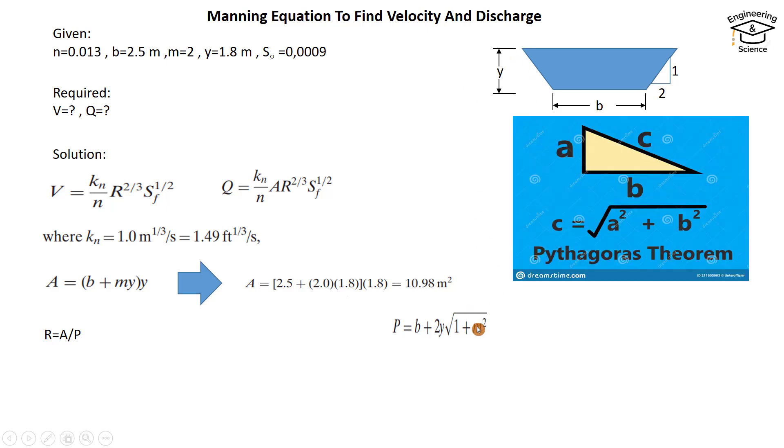b is the bottom, and 2y√(1 + m²) represents these two sides. How we got this: by Pythagorean theorem. If we have a triangle like this—a, b, c as the hypotenuse—then c equals √(a² + b²). Here a equals 1 and b equals m, so the side for the small triangle, when multiplied by y, becomes the side or hypotenuse for the large triangle.